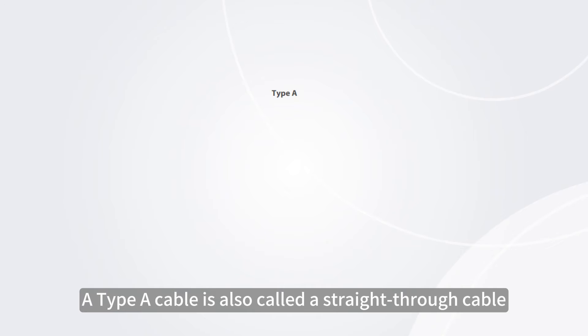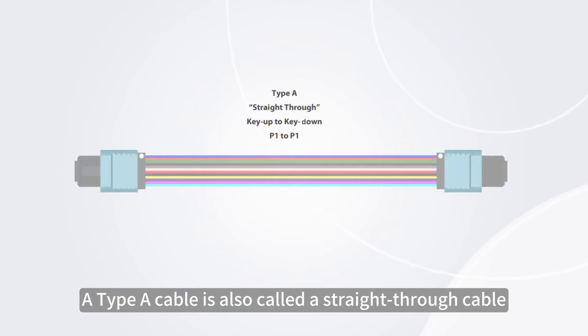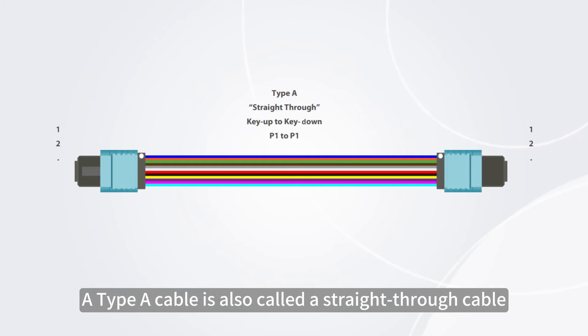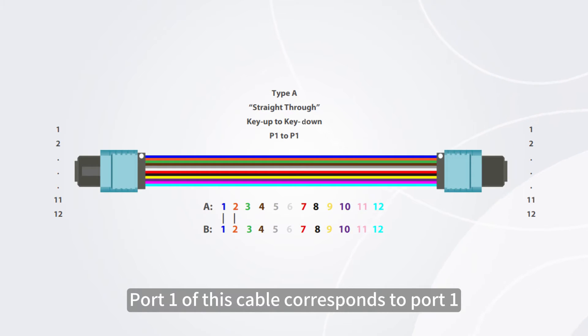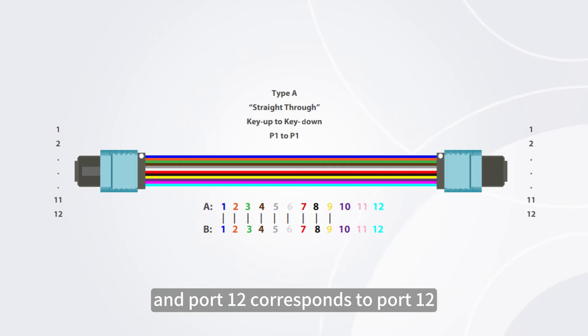A type A cable is also called a straight-through cable. Port 1 of this cable corresponds to port 1, and port 12 corresponds to port 12.